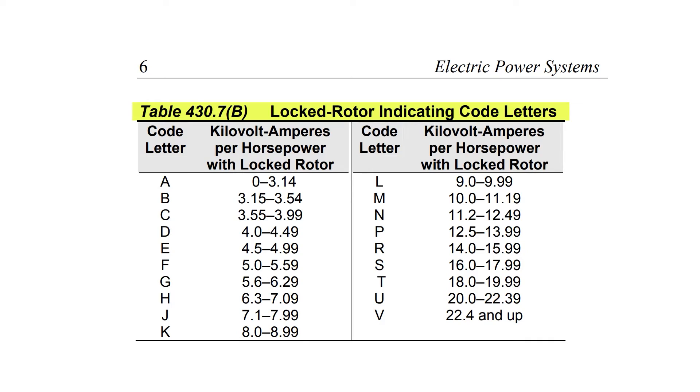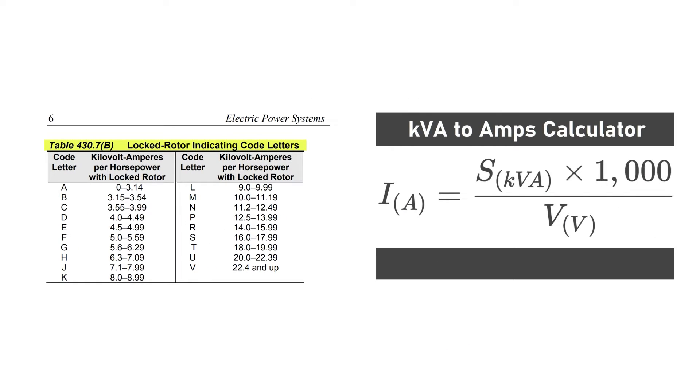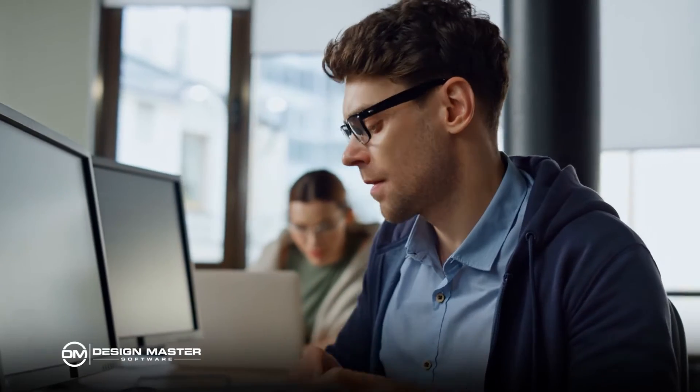Looking at that table, there's no current listed — only kVA per horsepower. The table is meant to be a little more universal. So if you know the horsepower of the motor, it gives you the kVA you can expect for the inrush current, and you have to convert it to current. When you convert it to current, you're going to get the numbers we've been talking about. The table avoids specifying voltage so it can remain universal.